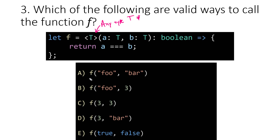Let's think about option A: if we call f with the string 'foo', that would mean T's type must be string. And that would mean that when we substitute the string 'bar' for b, it would also be string — and this checks out. So option A seems to be a valid call to the f function based on its definition.